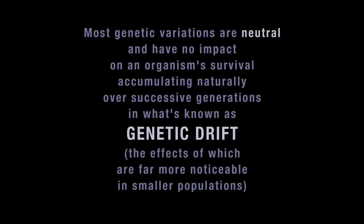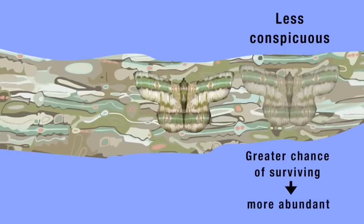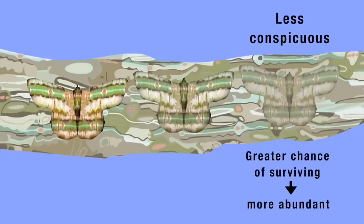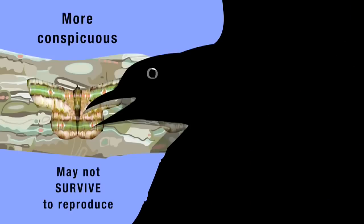But a variation in colour, for example, could have a major impact. If genetic variation makes some of an insect's offspring less conspicuous to predators, they'll have a greater chance of surviving and reproducing, and in the course of time the insects with this variation may become more abundant within the population. If the variation makes other offspring more conspicuous to predators, they may not survive to reproduce, and the variation may vanish or become suppressed because of natural selection.